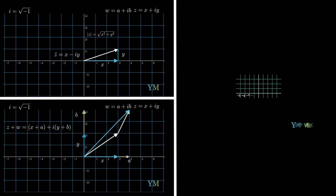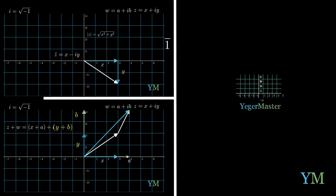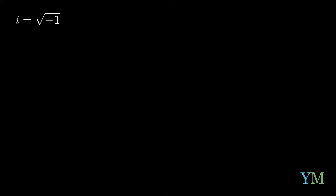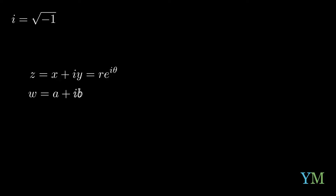So let's start at the beginning. We remember that we defined i to be the square root of minus 1 — this is the imaginary number. With it, we defined the complex number x plus iy. We saw that the polar presentation of that number would be r times e to the i theta. We also defined w to be the number a plus ib, and its polar presentation is rho times e to the i alpha.